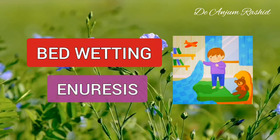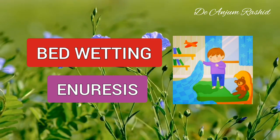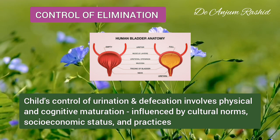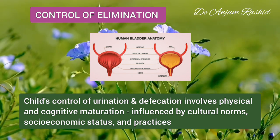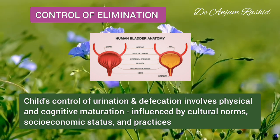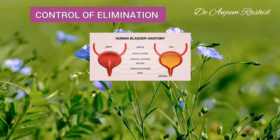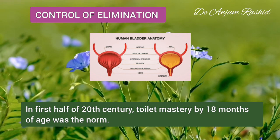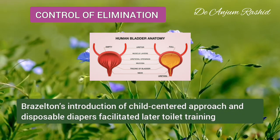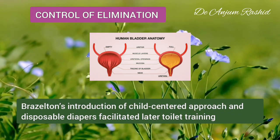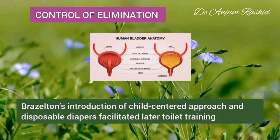Hello everyone, this video is about bedwetting or enuresis. I will discuss the causes, symptoms, diagnosis, and treatment. Child development of the control of urination and defecation involves physical and cognitive maturation, and is strongly influenced by cultural norms, socioeconomic status, and family practices. In the first half of the 20th century, toilet mastery by 18 months of age was the norm, but Brazelton's introduction of the child-centered approach and the invention of disposable diapers facilitated later toilet training.